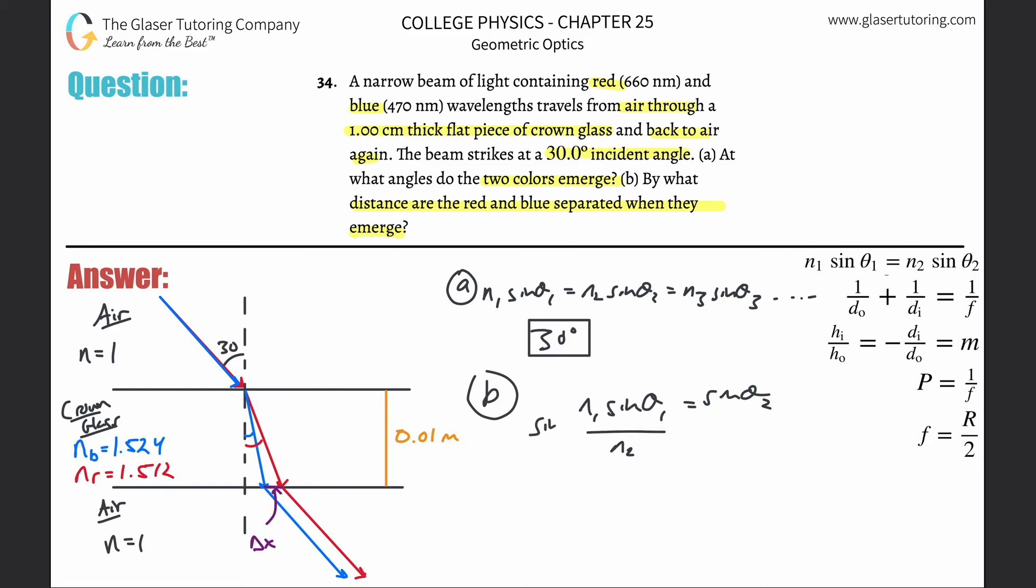So this is now inverse sine, and that's going to be canceling this sine on there, and that's your formula. Now we can plug in: n1 is that of air, so it's just 1, times the incident angle which is 30, then divided by the index of refraction for the blue light. This is then 1.524, and that's going to equal theta 2. So theta 2 is, take out the calculator: inverse sine of sine of 30 divided by 1.524. This is about 19.15 degrees.